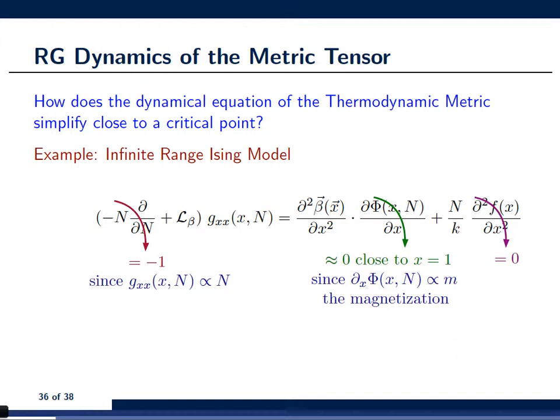So, let's start on the left. First, we notice that the operator minus N dD/dN essentially corresponds to a multiplication by minus 1. Why is that? Well, first of all, this is because gxx has only an n-dependence that comes from direct proportionality. This is because gxx is essentially twice the derivative of the free energy, which is extensive, so proportional to n.